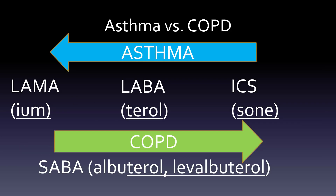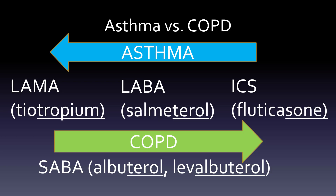Putting this into our arrows framework: the muscarinic antagonist carries the -ium ending, the beta-2 agonist carries the -terol ending, and the corticosteroid carries the -sone ending. The SABAs — albuterol and levalbuterol — also end in -terol. Note that levalbuterol and albuterol are essentially the same thing, both sharing the -terol stem. If you can place drugs into this framework, it's much easier to identify what you're dealing with. You've got the big three: muscarinic antagonist, beta-2 agonist, and corticosteroid.